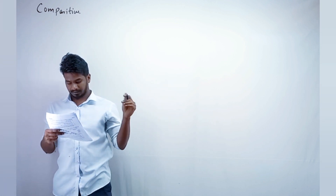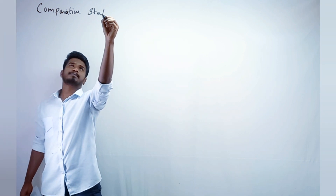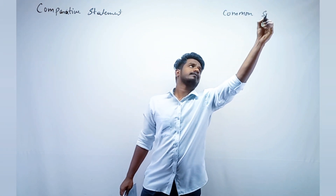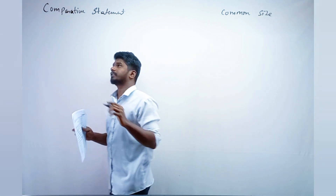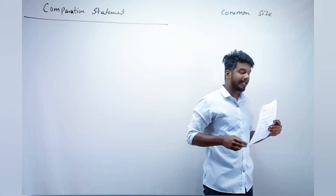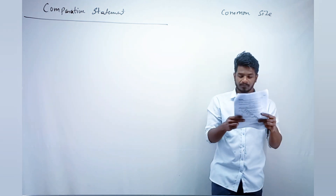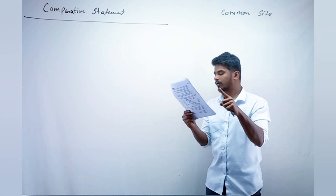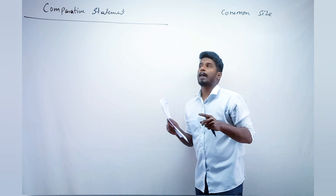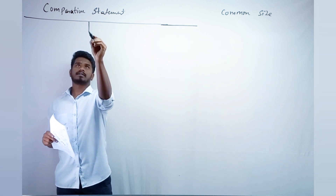We'll write the comparative statement on one side and the common size on the other, and we'll finish it in about 10 minutes. To bring it into format, we need to segregate the liabilities and assets. The liabilities given are: share capital, general reserve, secured loans, other current liabilities, and trade payable.